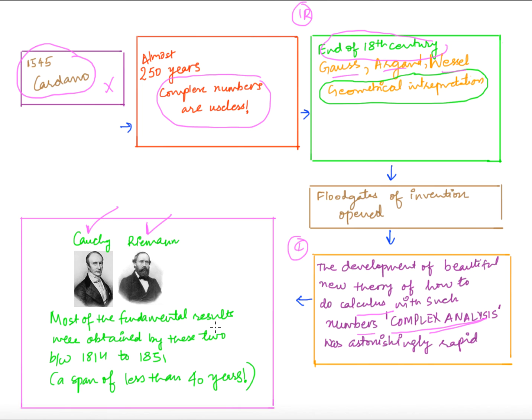Cauchy and Riemann introduced and developed the subject of complex analysis, discovering all the beautiful fundamental results in the time period between 1814 and 1851 — a span of less than 40 years. So for 250 years nobody understood complex numbers, but in just 40 years the whole subject of complex analysis was developed and proved to be tremendously useful.